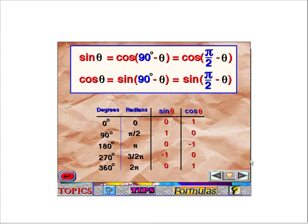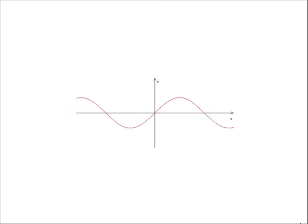Sine and cosine are co-functions. Sine of theta equals cosine of the complement of theta — that's 90 degrees minus theta, or pi over 2 minus theta. Cosine of theta equals sine of 90 degrees minus theta, or sine of pi over 2 minus theta. If you look at the two graphs, they look very similar — they're just shifted by 90 degrees, which is why we call them co-functions.